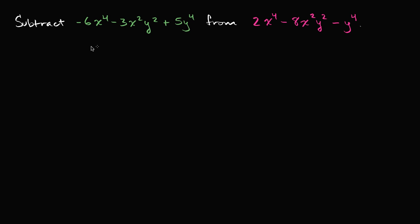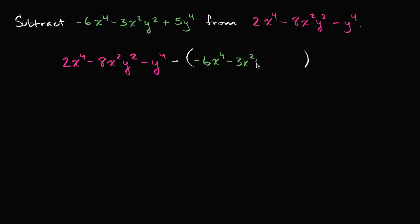So we can rewrite this as 2x to the fourth minus 8x squared y squared minus y to the fourth, minus — and I'm going to write this in parentheses — minus negative 6x to the fourth minus 3x squared y squared plus 5y to the fourth. Notice I'm subtracting this green polynomial in two variables from this magenta polynomial in two variables, which is exactly what it says to do.